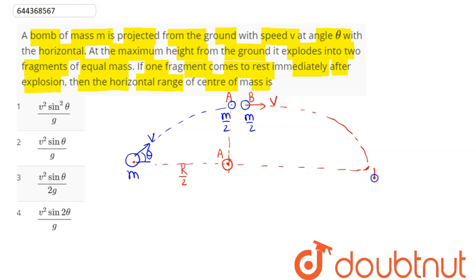The center of mass of the system of these two particles A and B will continue to move along the path along which this projectile was to be landed, that is at its range which is equal to u square sine 2 theta divided by g.